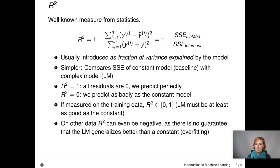There, the simple baseline model is an intercept-only model and the complex model is a linear model with at least one covariate.